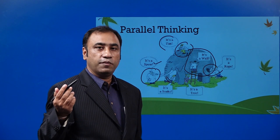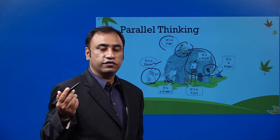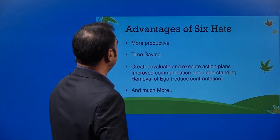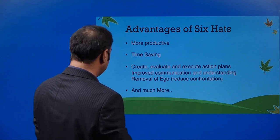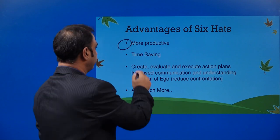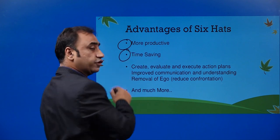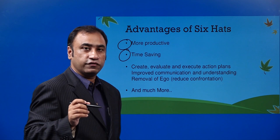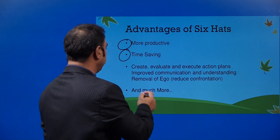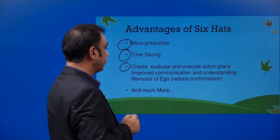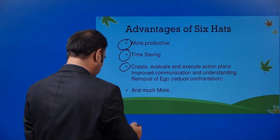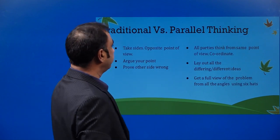Today we will learn a very important tool about parallel thinking which we can use for our own thinking process. That tool is the tool of six hats. Six hats will help you be more productive, save your time, and help you not come back and think again because you are already thinking with six different perspectives. It helps you create, evaluate, execute action plans, improve communication, understanding, and removal of ego, and much more.